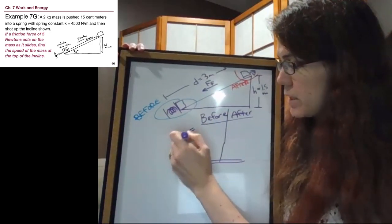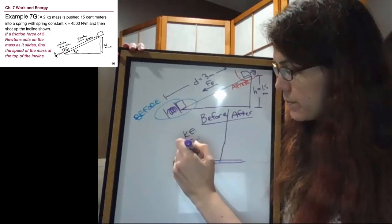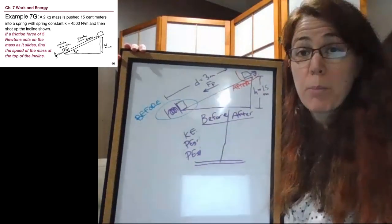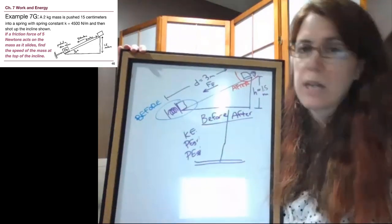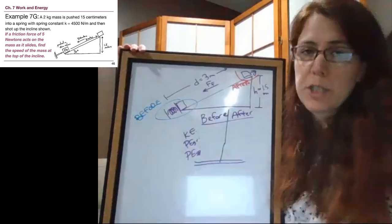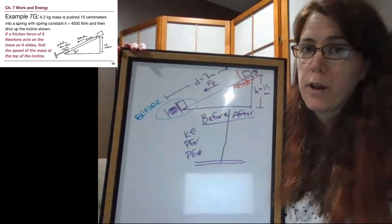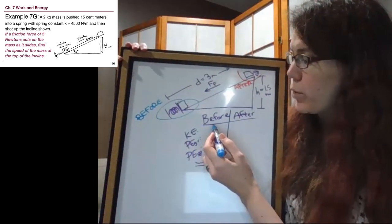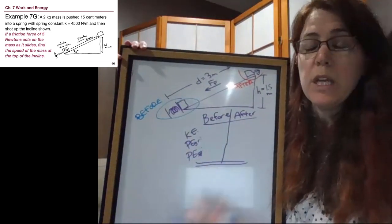Now we do this so that when we are asking ourselves these kind of simple questions of what's happening in the problem before and what's happening in the problem after, it's never meant to feel like a guessing game. We always know where we're trying to look to answer these straightforward yes or no questions. So we have kinetic energy, we have the potential energy from gravity, and then we have the potential energy from a spring.